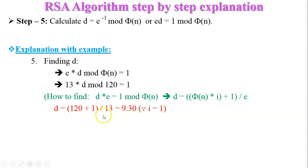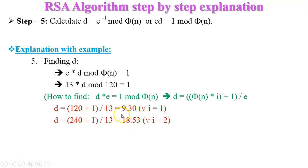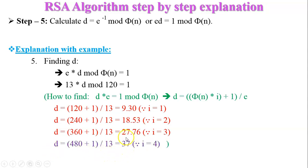Finding d iteratively: when i equals 1, d equals approximately 9.30 — not an integer. When i equals 2, d is approximately 18.53 — not an integer. When i equals 3, d is approximately 27.76 — not an integer. When i equals 4, d equals 37 — an exact integer. We stop when we get an exact integer value, so d equals 37. Our private key is 37.